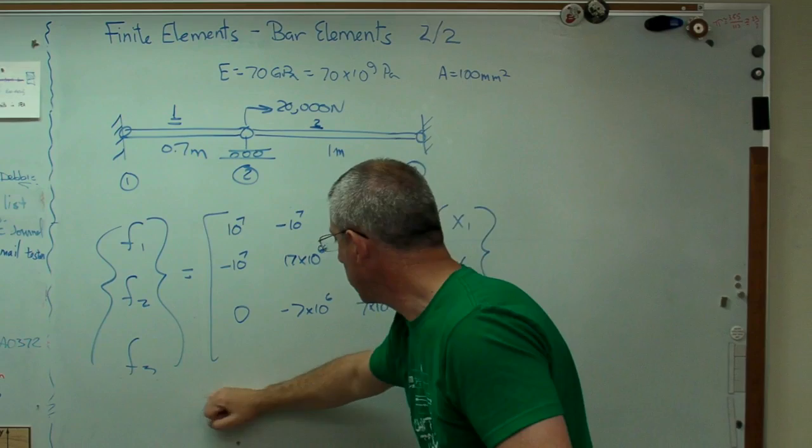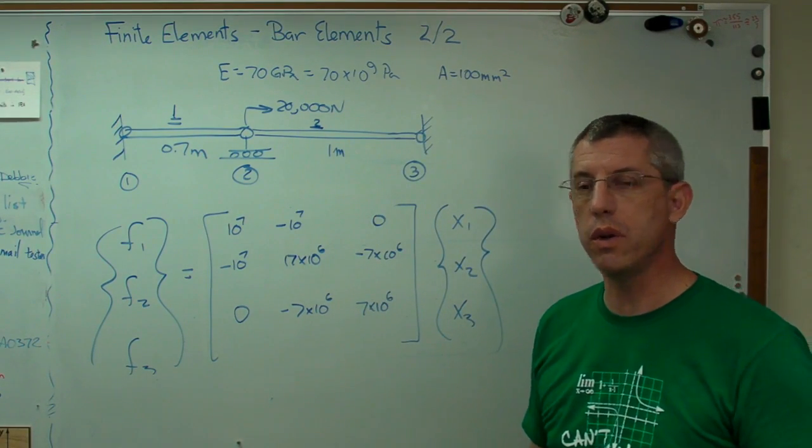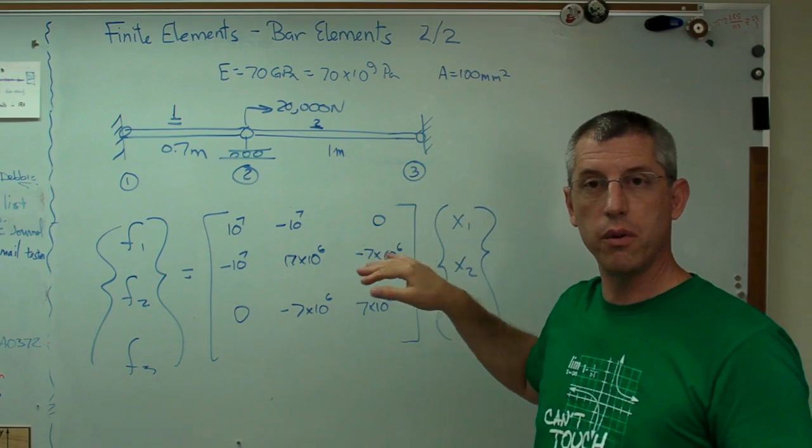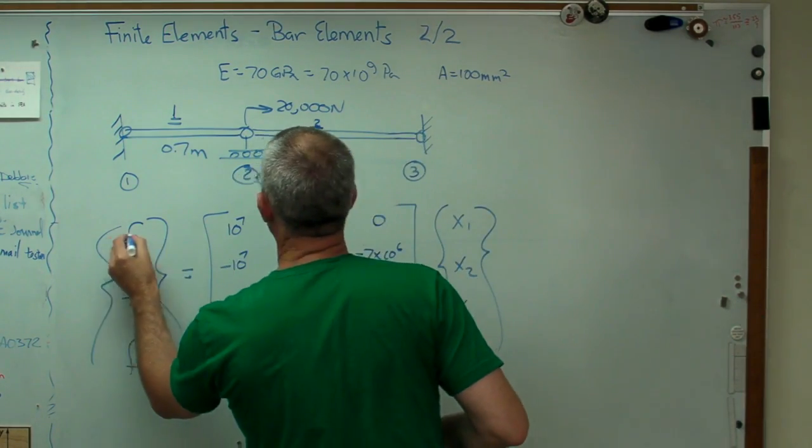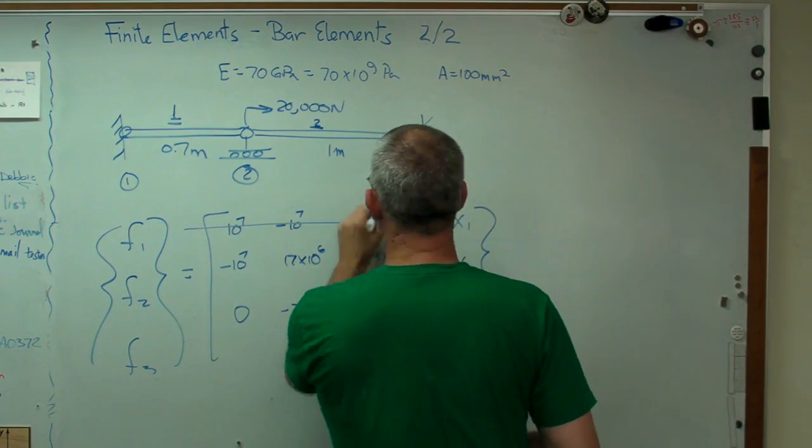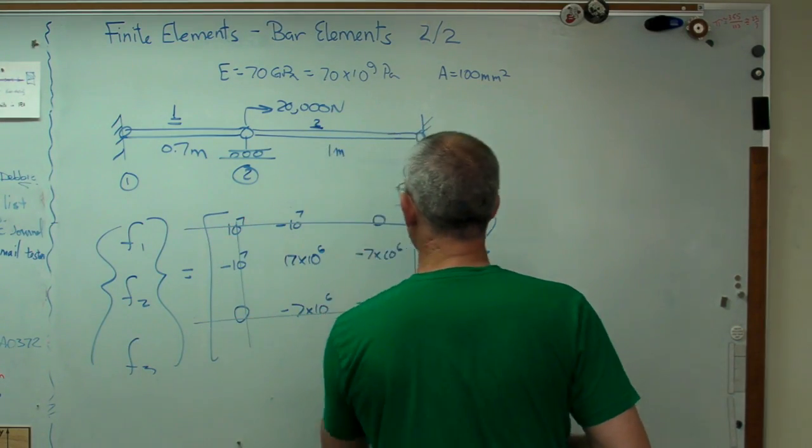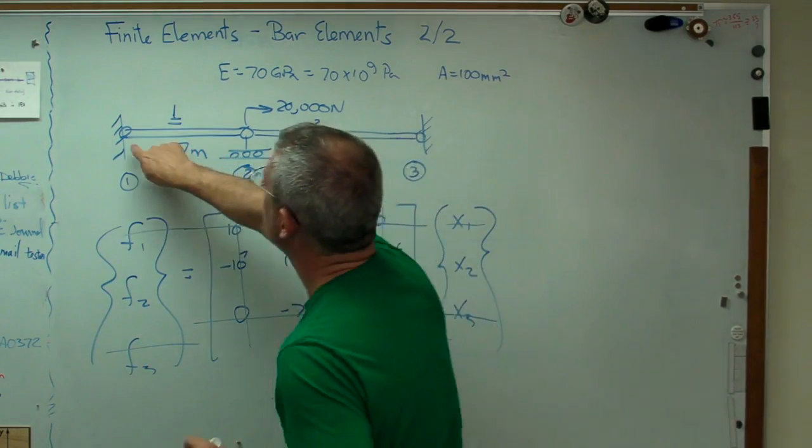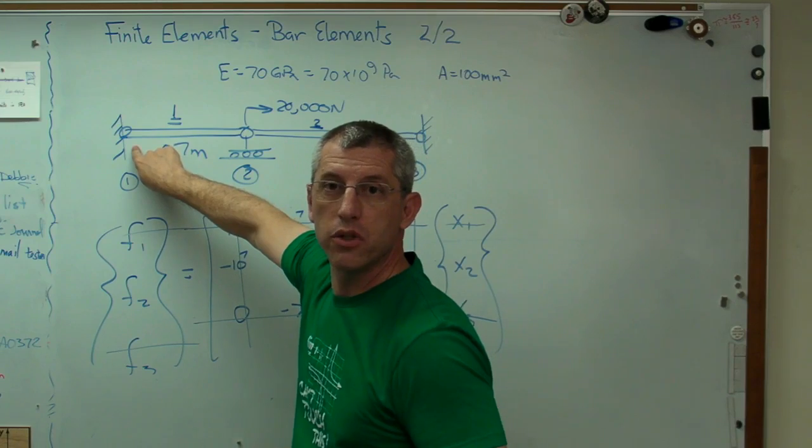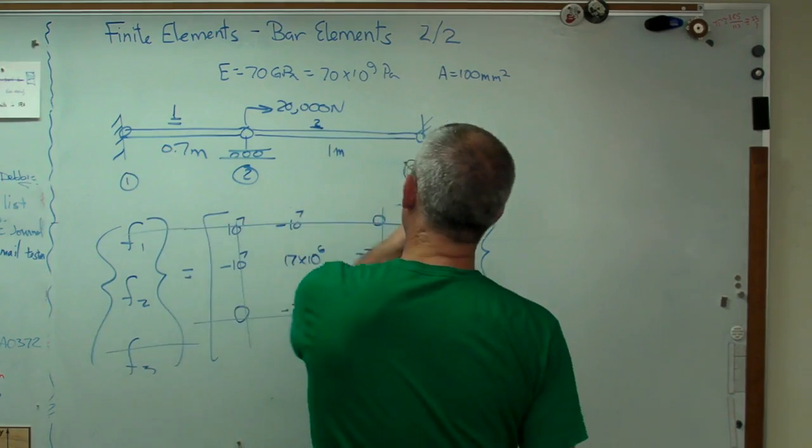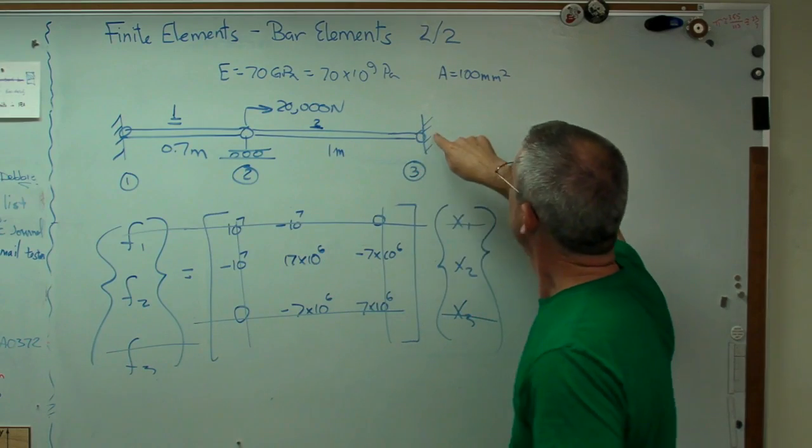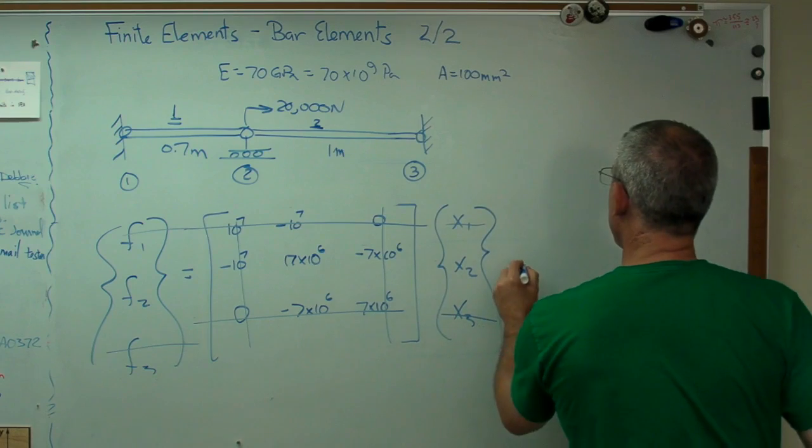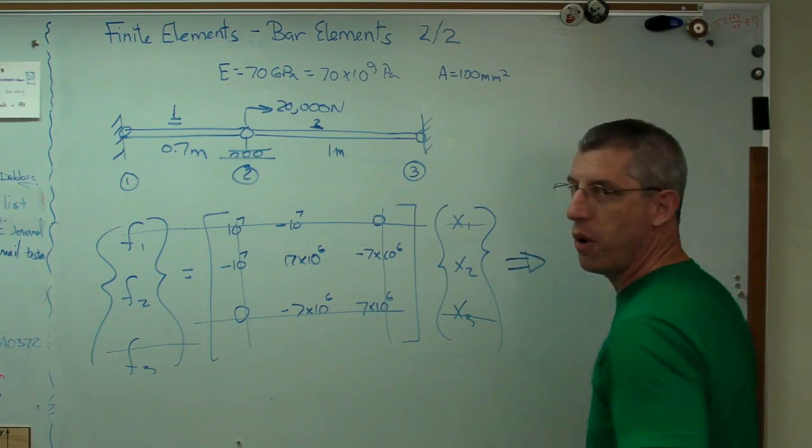I need to take into account the fact that x1 is zero and x3 is zero. Now, because I'm in a hurry, I'm just going to tell you how we do that. Every time you need to eliminate a degree of freedom from your finite element model, you simply cross out that row and that column from your problem. Degree of freedom number one is constrained. That's the lingo. It means it can't move. So I get rid of row one, column one. Degree of freedom three is constrained. I get rid of row three and column three.